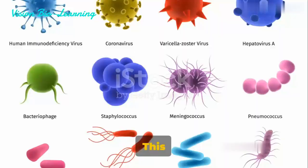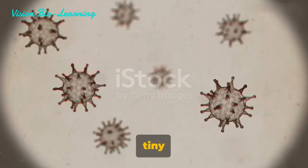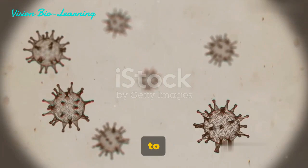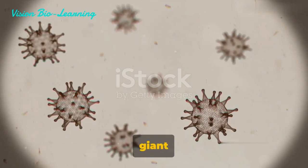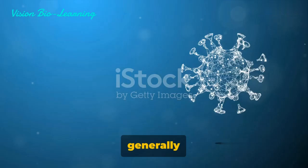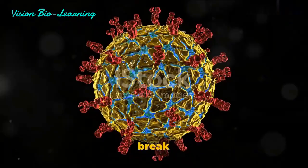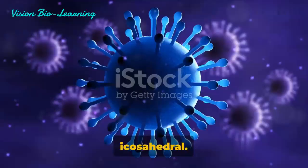This diversity is reflected in their size and shape. Some viruses are as tiny as 20 nanometers in diameter, while others can reach up to 1400 nanometers in length and 80 nanometers in diameter. We've even discovered giant viruses measuring up to 400 nanometers in diameter. Their structures also vary, generally falling into one of two categories: helical or icosahedral. But some viruses break the mold with complex structures that are neither helical nor icosahedral.